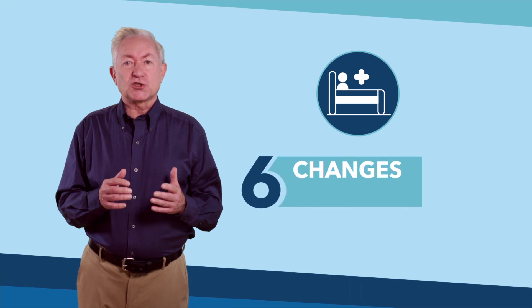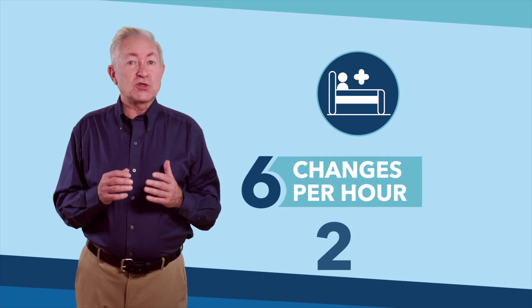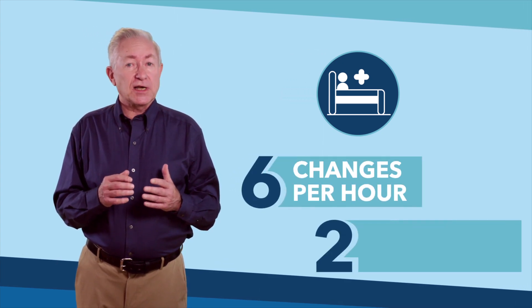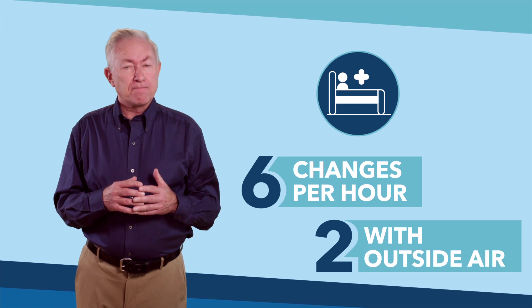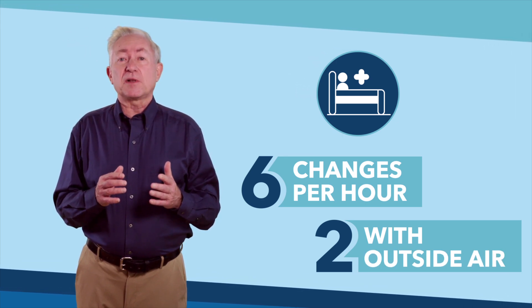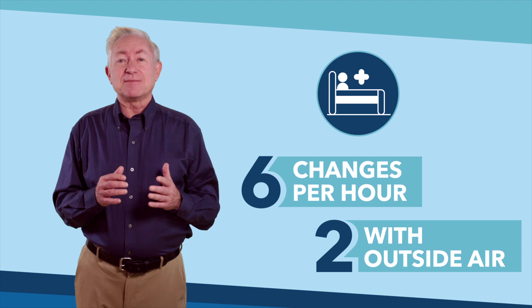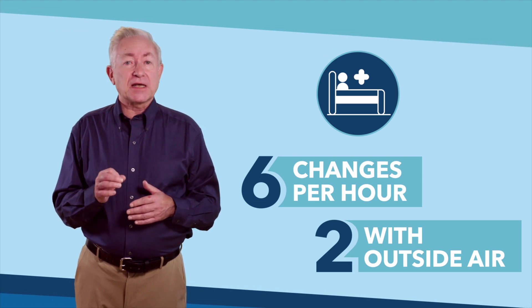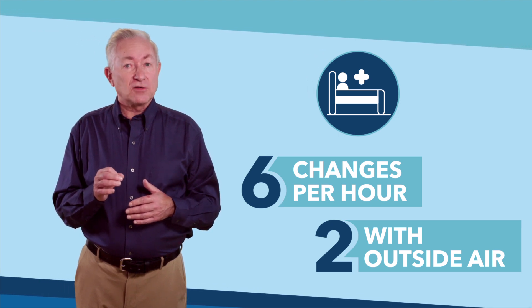There are building codes that set the minimum requirement of outside air being brought in based on the type of space. For example, a standard patient room has to have a total of six air changes per hour and at least two of those air changes have to be with outside air. This means that the total air in the room has to be fully replaced six times each hour and 50 percent of that air must be fresh air from the outside.